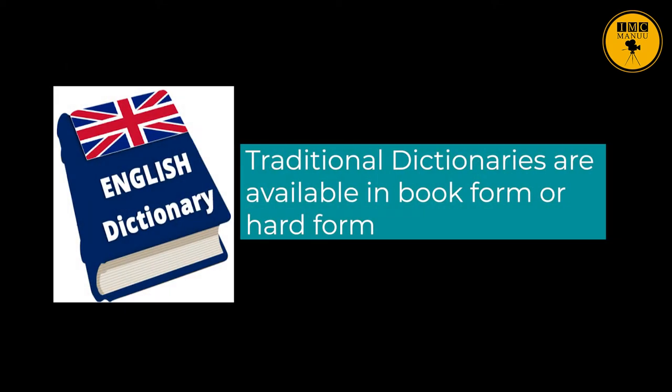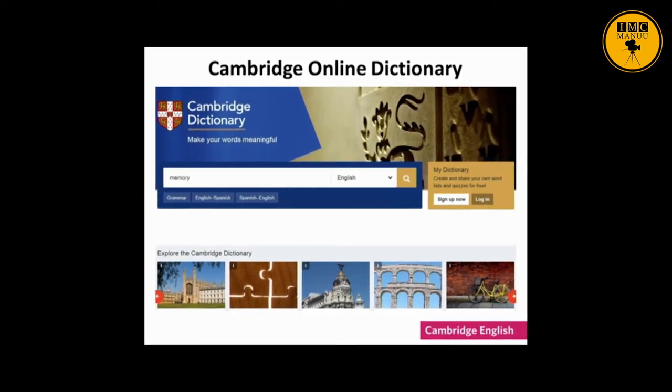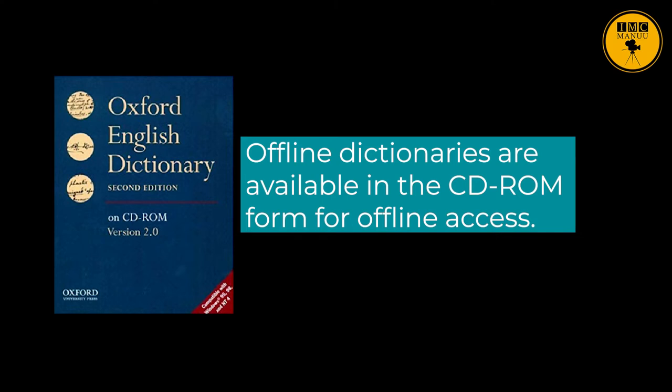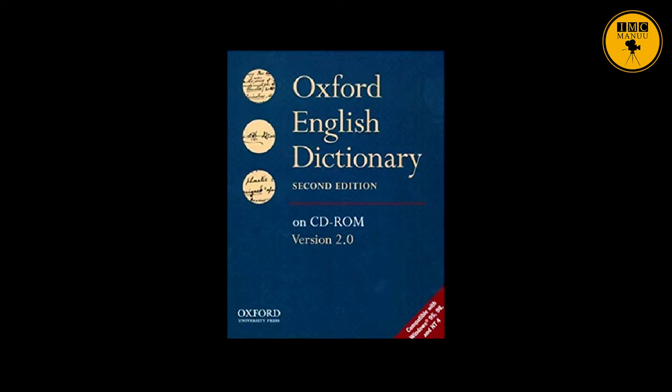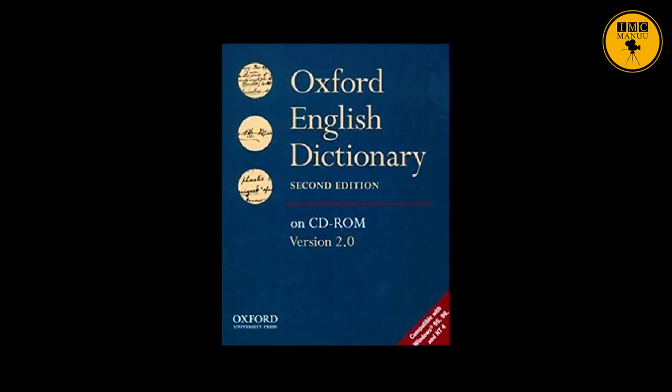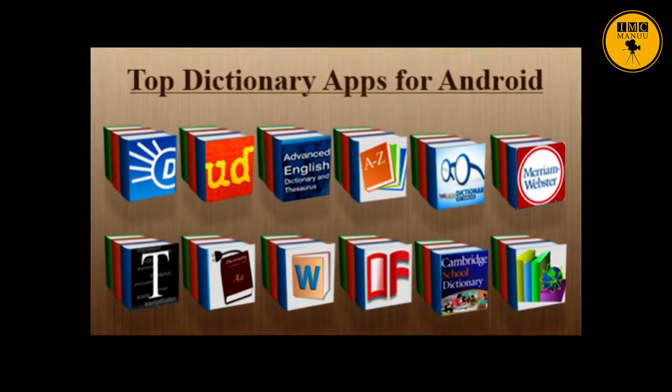Traditional Dictionaries are available in book or hard form. Online Dictionaries can be accessed online, meaning when you are connected with the internet. Here you can see an example of the Cambridge Online Dictionary, which you can access with your mobile or computer when connected to the internet. Offline Dictionaries are available in CD-ROM form for offline access — when you are not connected with internet. You can see the Oxford English Dictionary on CD-ROM version 2.0. You can also access dictionaries through various dictionary apps available on smartphones and mobile devices.